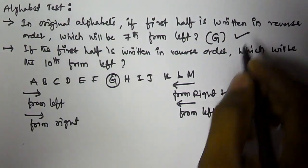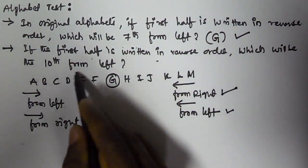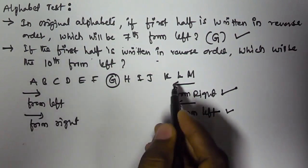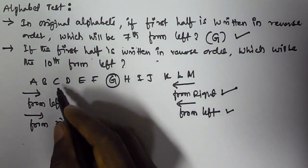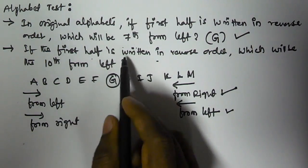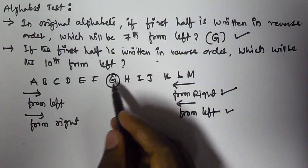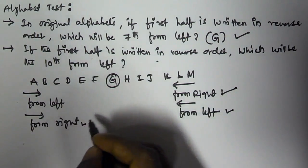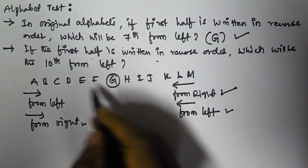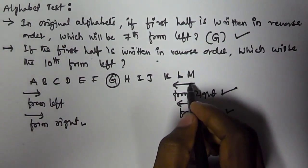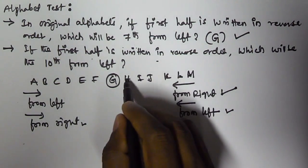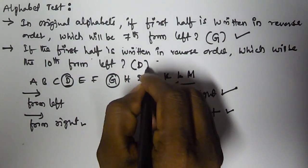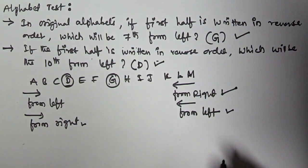For the second problem, if the first half is written in reverse order, which will be the tenth from the left? In original order, counting A to M is from left, and M to A is from right. But here the first half is written in reverse order, so from right becomes from left. Counting from the reversed side: one, two, three, four, five, six, seven, eight, nine, ten — the tenth is D. So the answer for the second one is D.